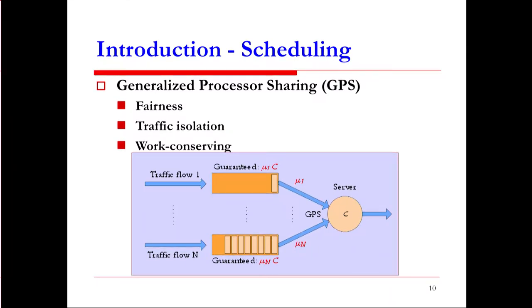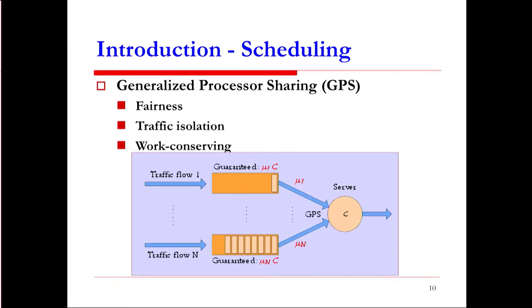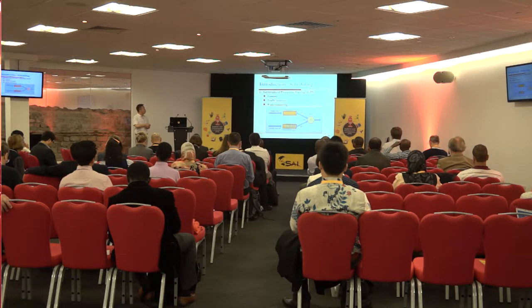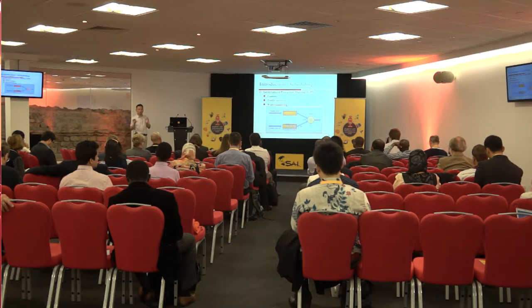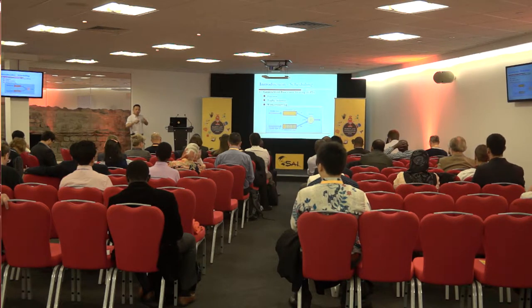To improve fairness, generalized processor sharing (GPS) has been proposed. In GPS, each traffic flow is assigned a fixed weight which guarantees a minimum service capacity. For example, traffic flows 1 through n are scheduled by GPS, and the weight mu_i is assigned to traffic flow i, giving it a guaranteed service capacity of mu_i times the total service capacity C. This provides better fairness compared to priority queuing, enables traffic isolation, and is work-conserving — meaning if any queue is empty, the system redistributes that guaranteed capacity to other backlogged traffic flows to improve system utilization.